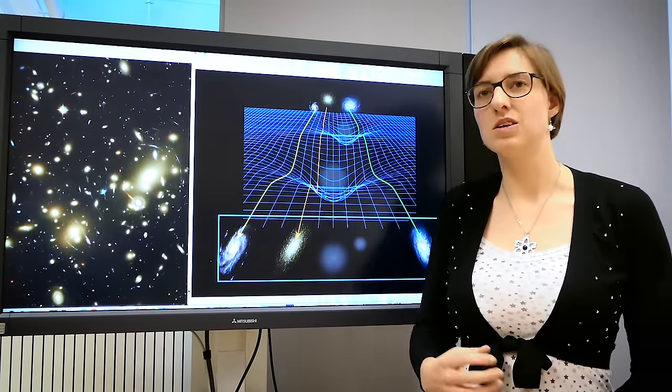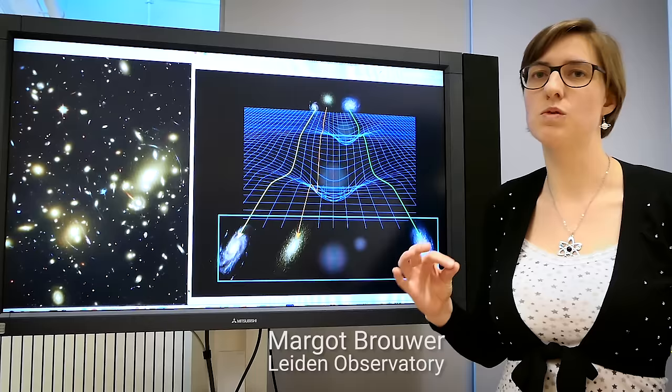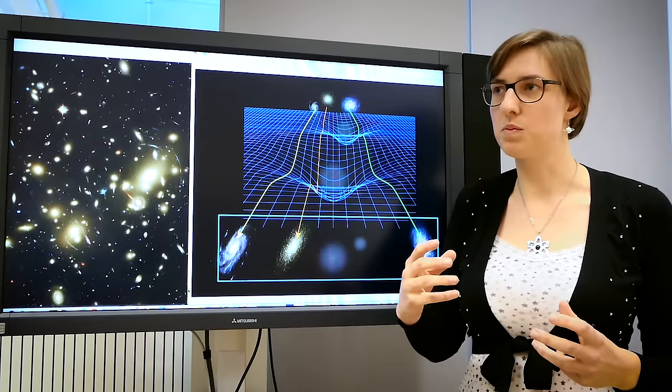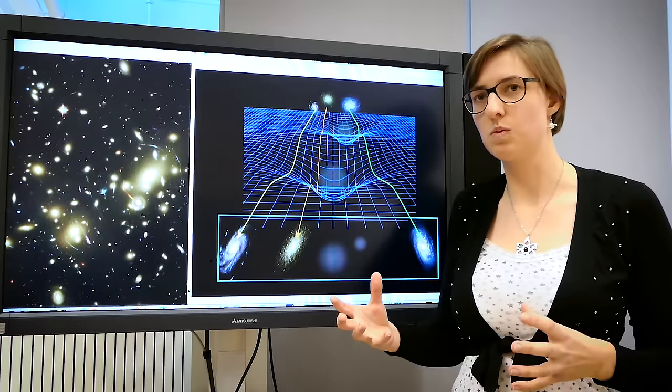What we did is a first test of Erik Verlinde's new theory of gravity. We tested his theory by observing the distribution of gravity around galaxies using weak gravitational lensing.